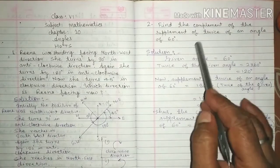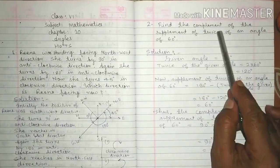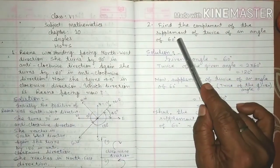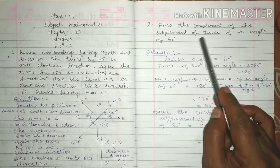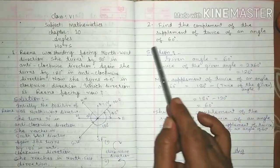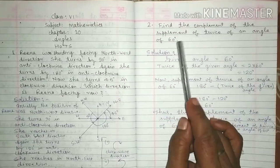Now question number 2: Find the complement of the supplement of twice of an angle of 60 degrees.